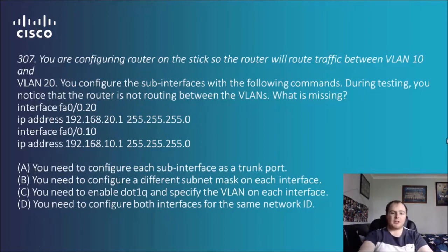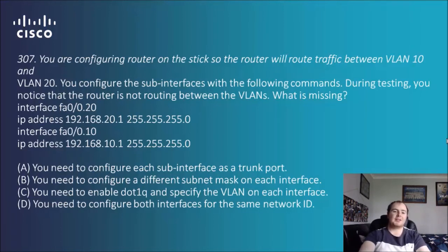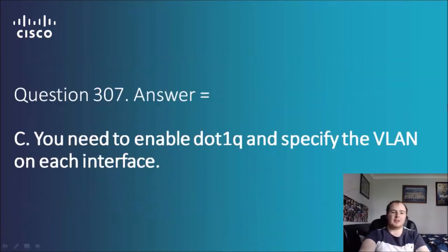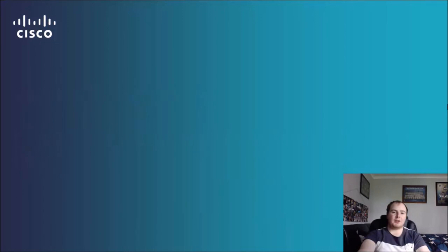The answer options are: you need to configure each sub-interface as a trunk port; you need to configure a different subnet mask on each interface; you need to enable dot1q and specify the VLAN on each interface; or you need to configure both interfaces for the same network ID. When creating sub-interfaces, you need to ensure there is an encapsulation protocol — dot1q. So the answer is C: you need to enable dot1q and specify the VLAN on each interface. You need to specify encapsulation there.